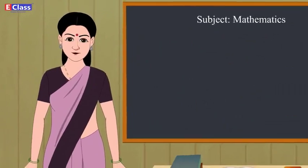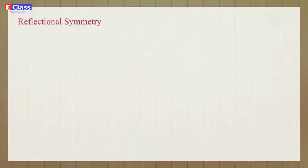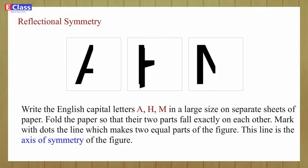Friends, let's learn what is meant by symmetry. Reflectional Symmetry: Write the English capital letters A, H, M in a large size on separate sheets of paper. Fold the paper so that their two parts fall exactly on each other. Mark with dots the line which makes two equal parts of the figure.